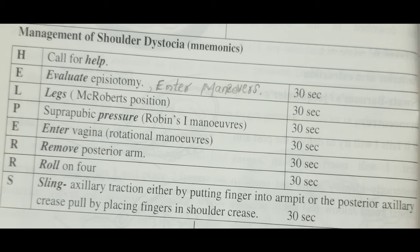Next comes L. L means 'Legs' — by legs we mean making a specific position which is called the McRoberts position. After that comes P, which stands for suprapubic pressure or the Rubin's one maneuver. Then comes the second E, which stands for 'Enter vagina' — meaning we have to perform different rotational maneuvers like the Wood screw maneuver and the reverse Wood screw maneuver.